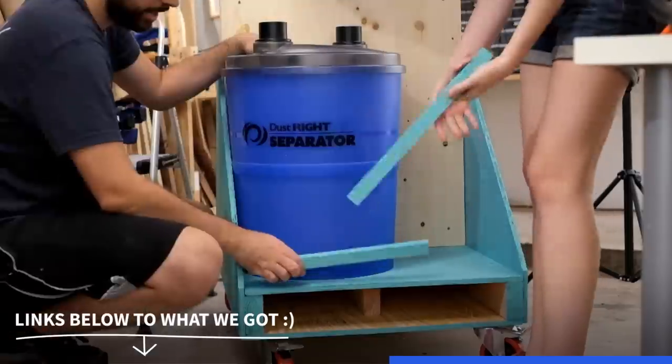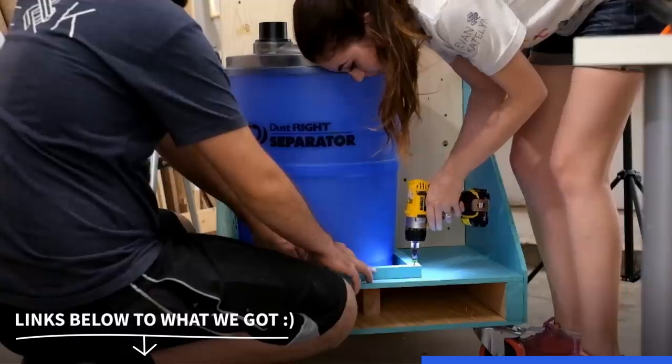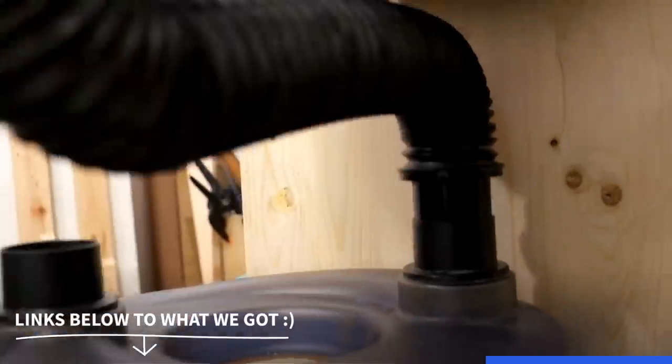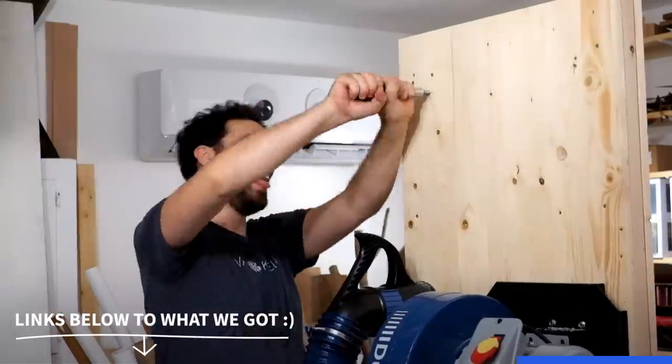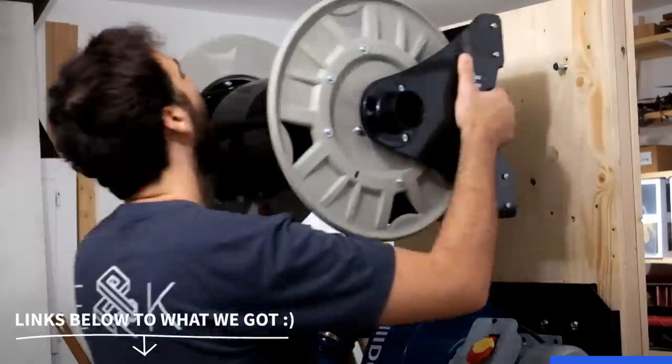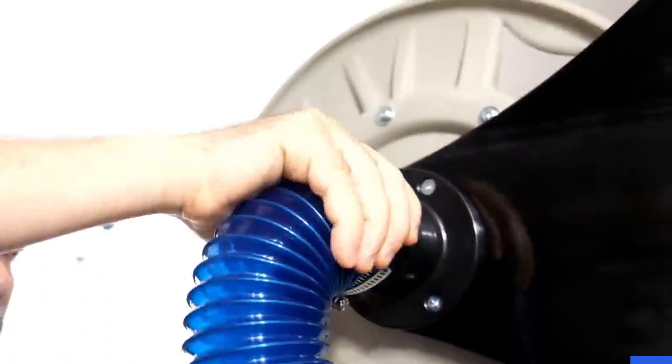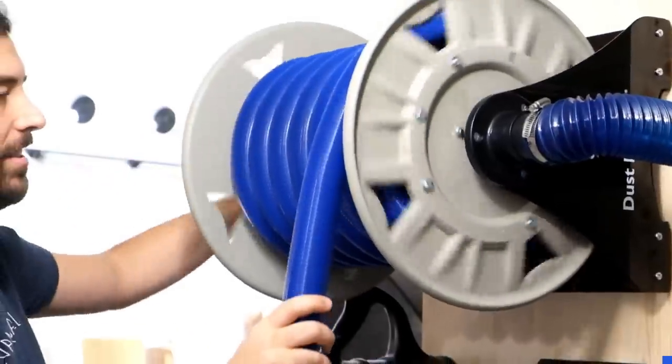The separator uses centrifugal force to remove larger bits which extends the life of our shop vac filter and it's a lot easier to empty out. The hose reel is for our shop OCD so no more are the days where hoses lay around sadly on the floor. Plus, since we can store longer hose, we don't have to constantly be connecting extra stretches to reach where we need.